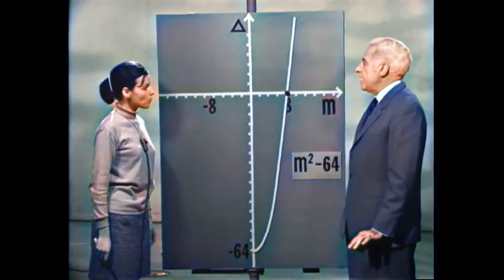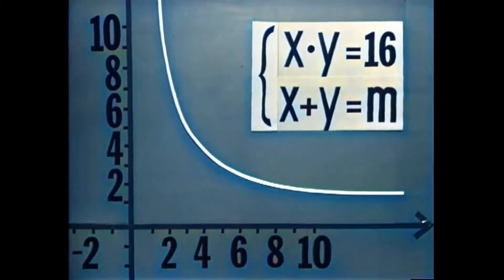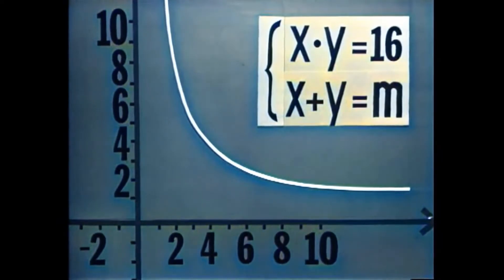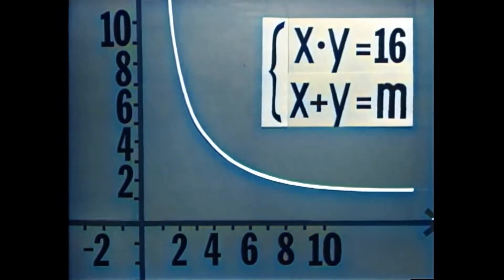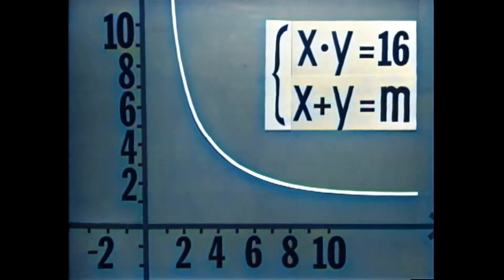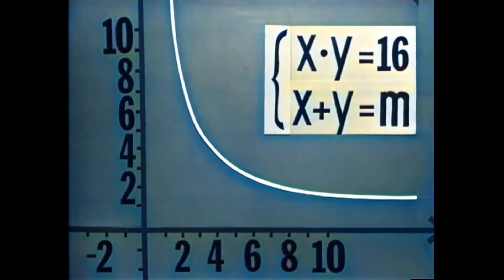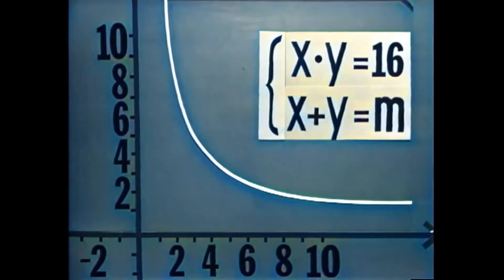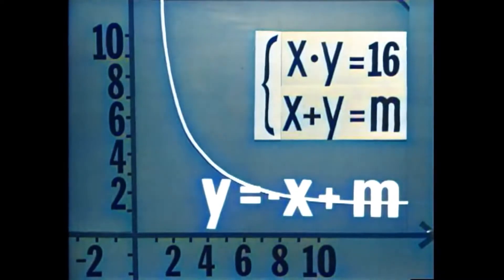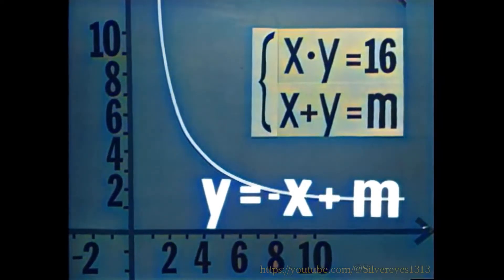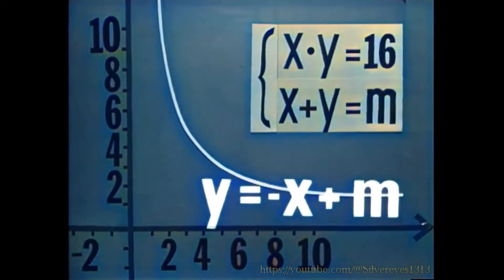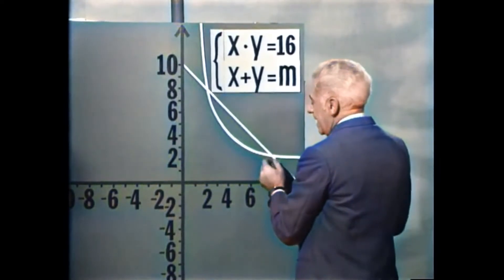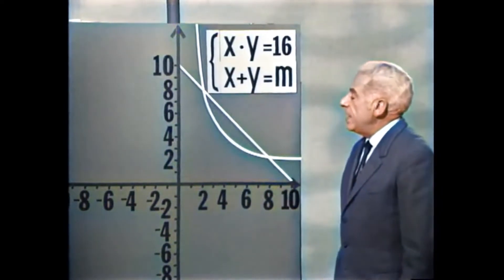אותו הדבר אפשר לראות בדרך גרפית. התיאור הגרפי של המשוואה הראשונה הוא ההיפרבולה. במשוואה השנייה יש פרמטר, ואם נציב מספרים שונים במקום M נקבל ישרים מקבילים זה לזה — כולם בשיפוע מינוס 1. כבר ראינו את הישר X פלוס Y שווה ל-10, שבו מחצית ההיקף הייתה 10.